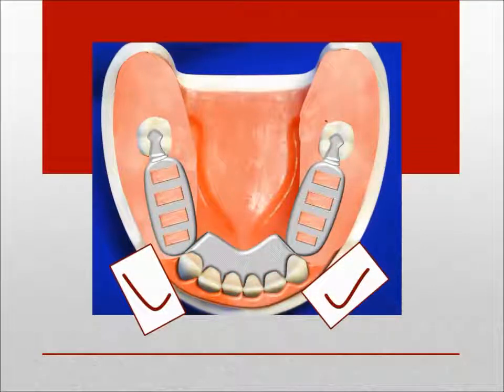Placement of the major connector and I-bar retainers is illustrated. A fulcrum line may exist between teeth 22 and 27, but operates in only one direction. The rested lingual plate assists to limit this anterior-posterior motion. Frictional retention of proximal plates and parallelism of guide planes may also prevent lifting of the posterior portion of the denture.